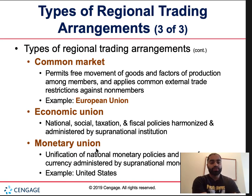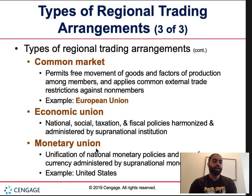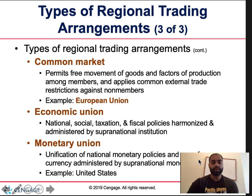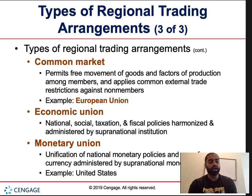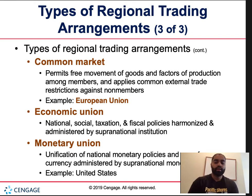An economic union is where national social, taxation, and fiscal policies are harmonized and administered by a supranational institution — a hierarchy that imposes policies implemented by all participating parties. A monetary union is the unification of national monetary policies and currencies administered by a supranational entity. For example, the United States — we'll talk more about this when we look at NAFTA.